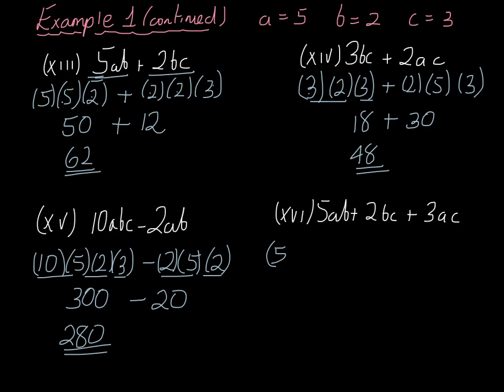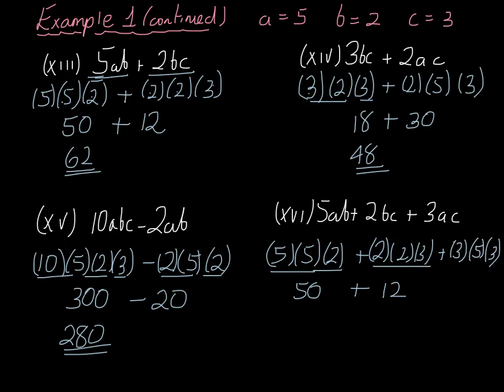Last one, 5ab, so that's 5 multiplied by a is 5, multiplied by b is 2, plus 2bc, so that's 2 in brackets multiplied by 2 multiplied by 3, plus 3 in brackets multiplied by 5 multiplied by 3. 5 times 5 is 25 times 2 is 50, plus 2 times 2 is 4 times 3 is 12, plus 3 times 5 is 15 times 3 is 45. Add these up now, 50 and 12 is equal to 62, and then you add the 45, and you get 107, and you are done.